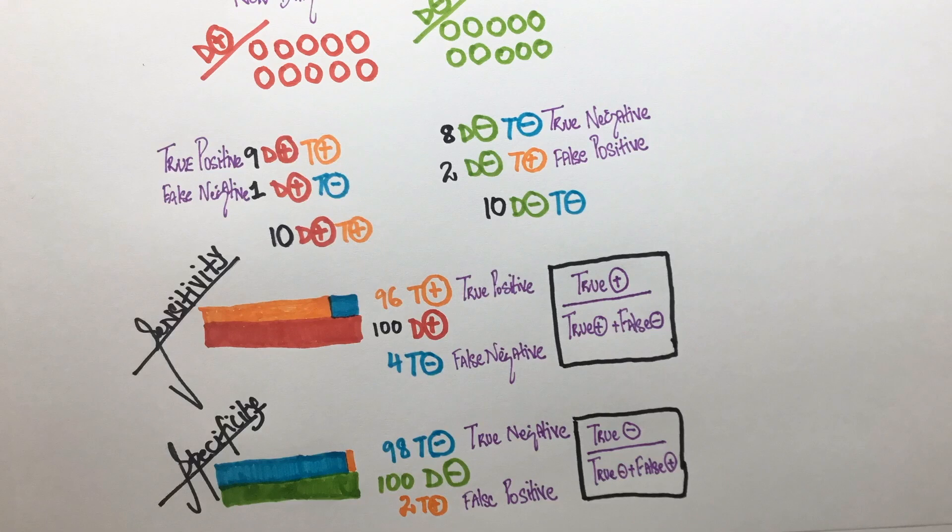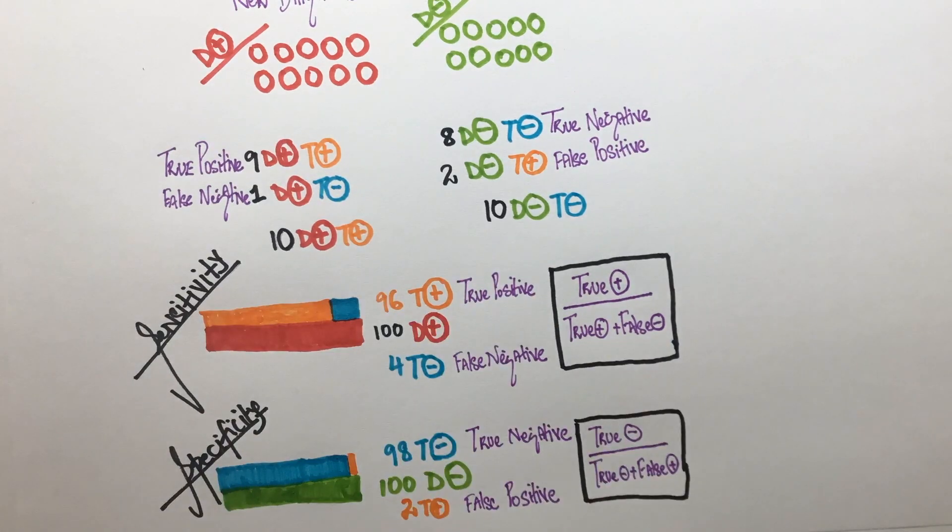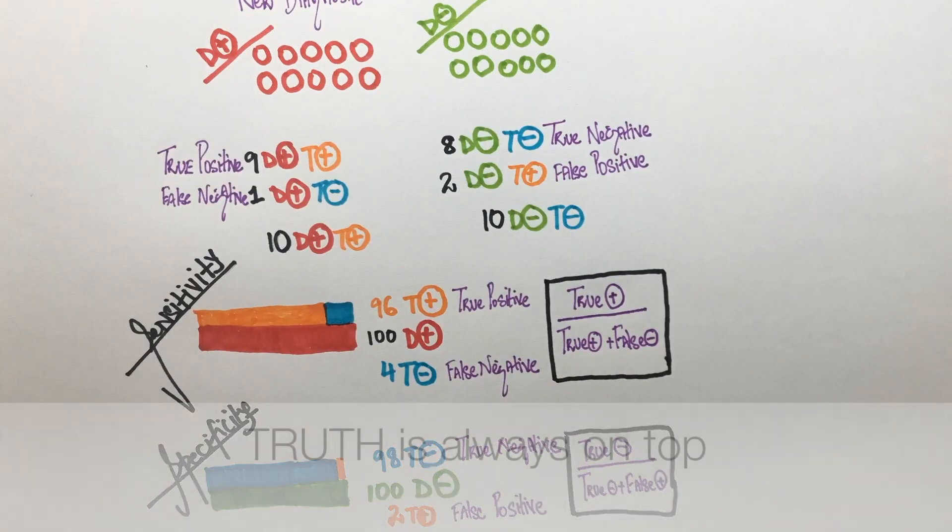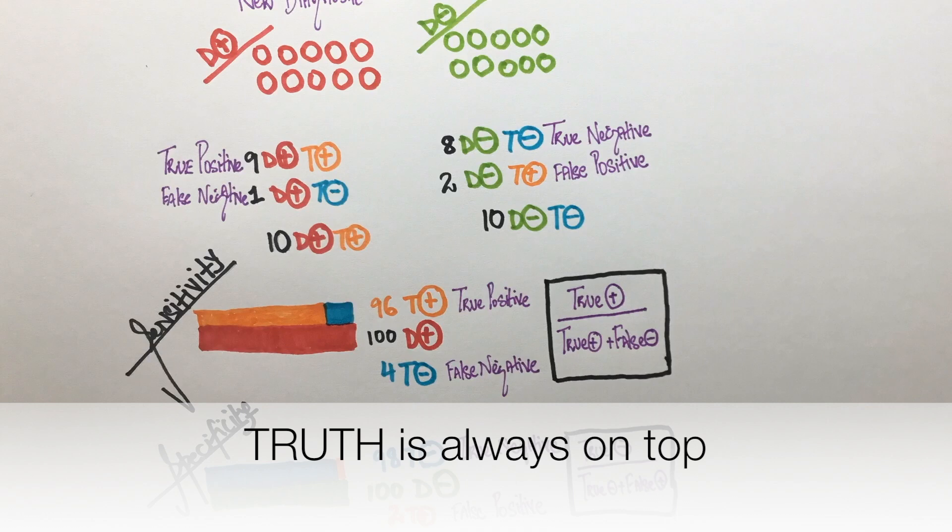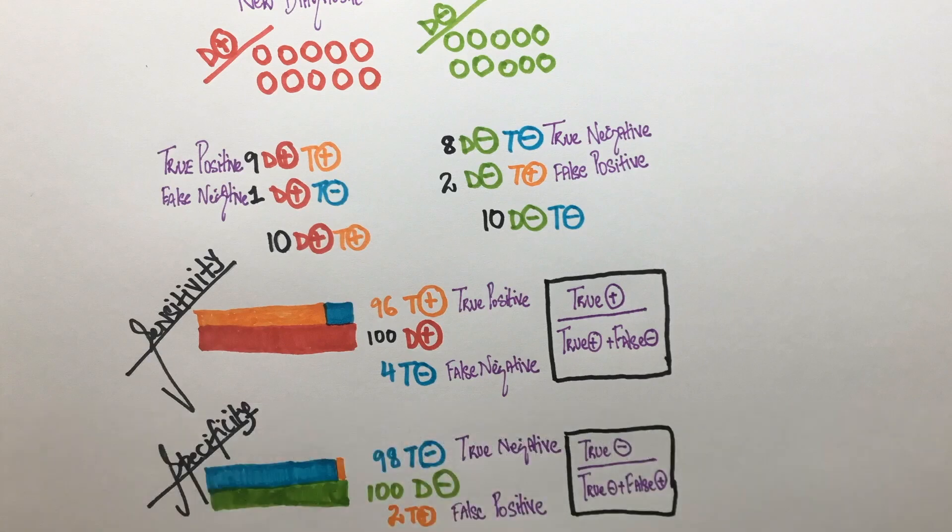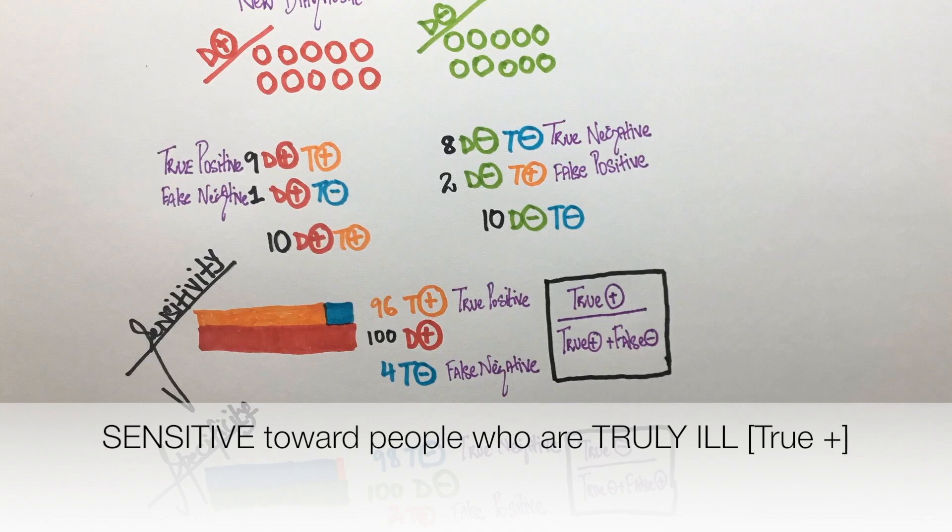I remember these by the following clues. In sensitivity and specificity, the truth is always on top. So, true positive or true negative will always be the numerator. As doctors, we should always be sensitive towards people who are truly ill.